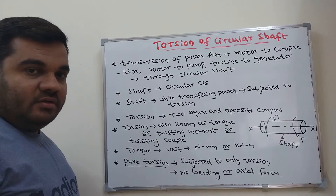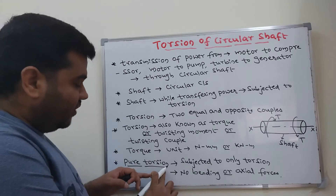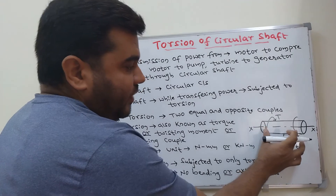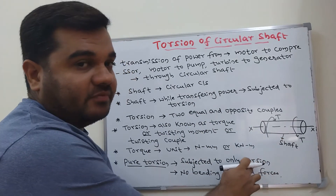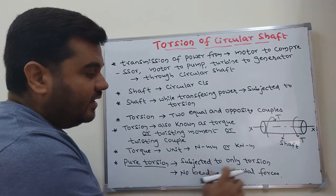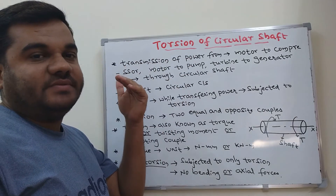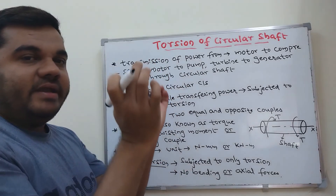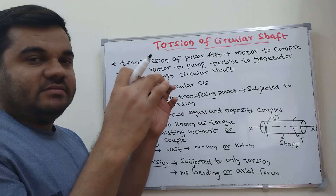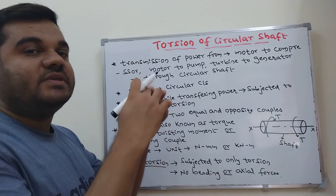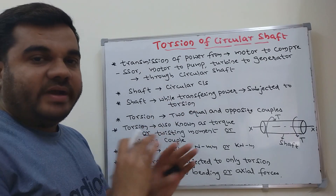The next point is pure torsion. You are applying two equal and opposite forces — a couple. Pure means the circular shaft is subjected only to torsional forces. It should not be subjected to bending forces or any axial forces. Sometimes components experience combined forces — bending with axial, or bending with axial and torsion — but in pure torsion, only torsional forces act; no bending, no axial forces.